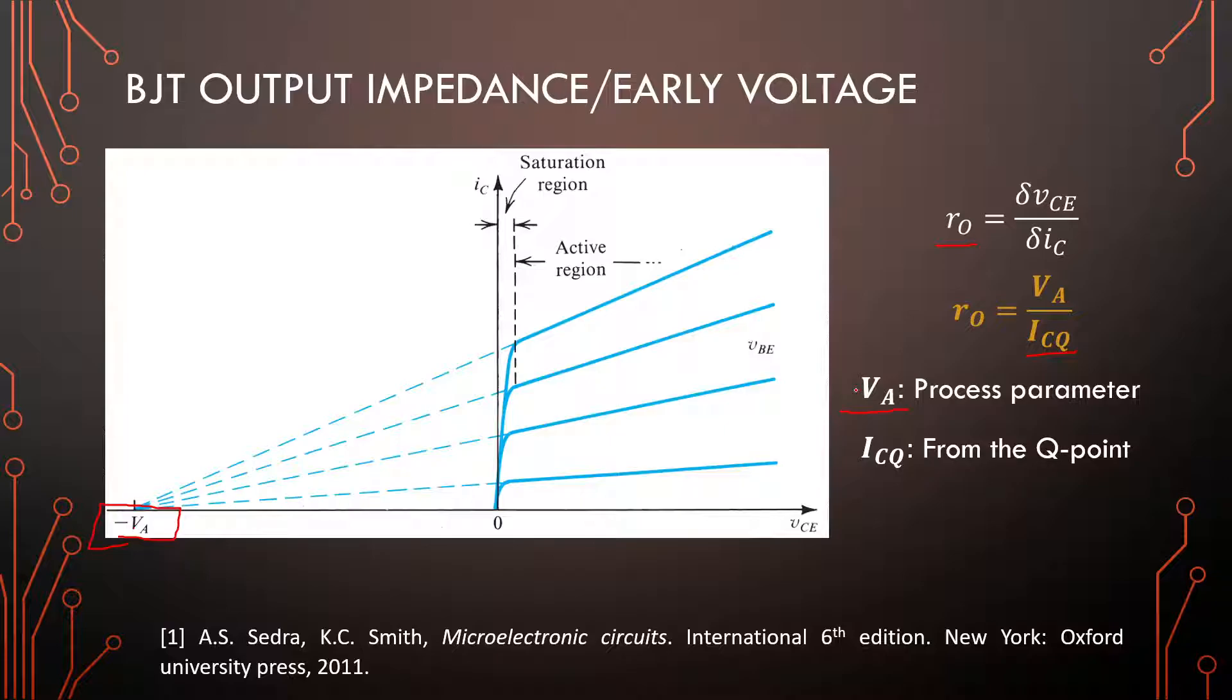So if you don't have early voltage information and you're designing or analyzing, you just assume VA to be infinite. And then r_out will be infinite and r_out will disappear from your model. But if you have early voltage, you can work with it and it will give you more accurate results in the end. So that's one parameter down.